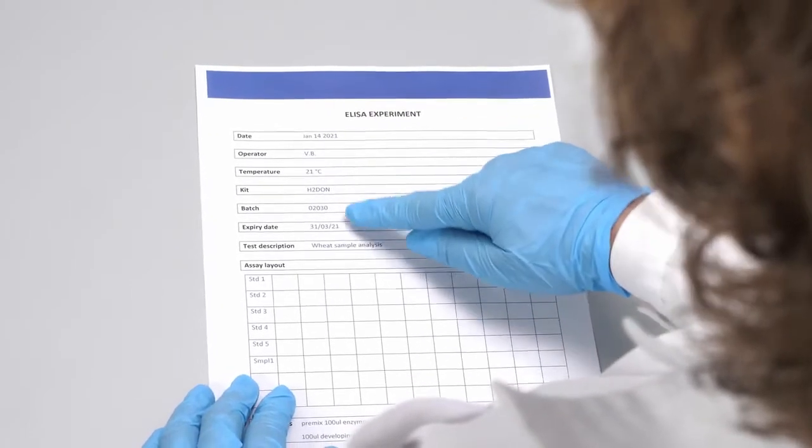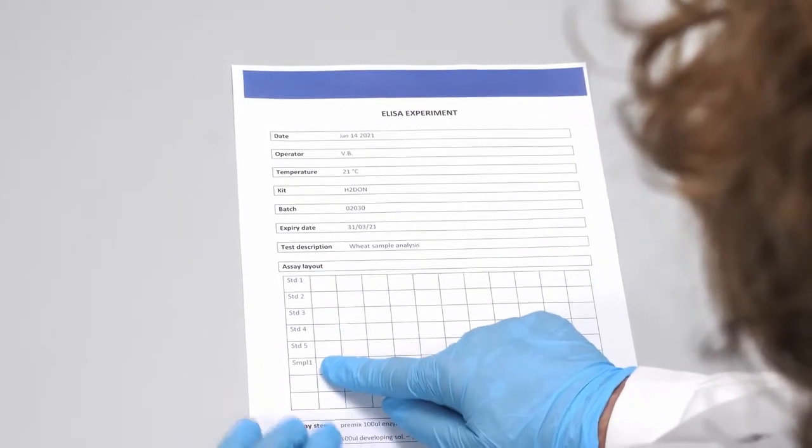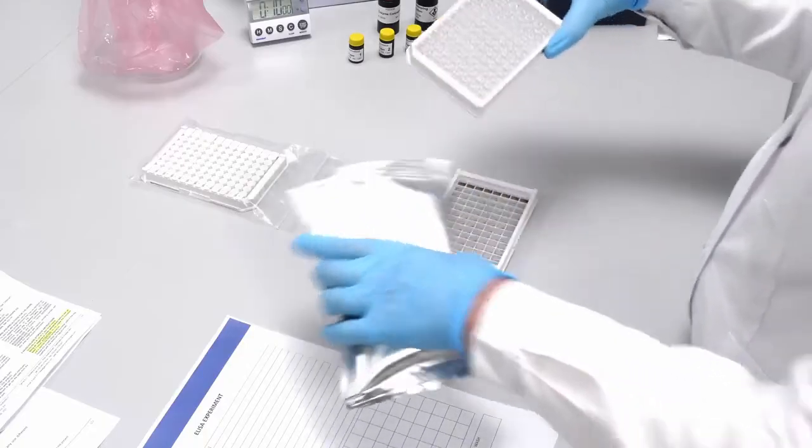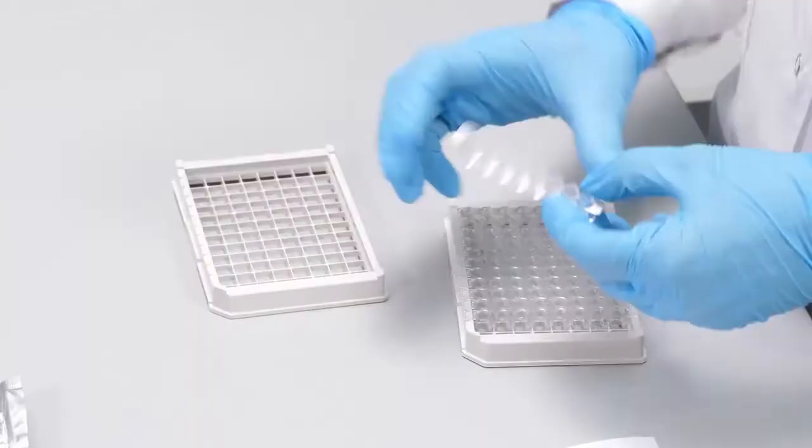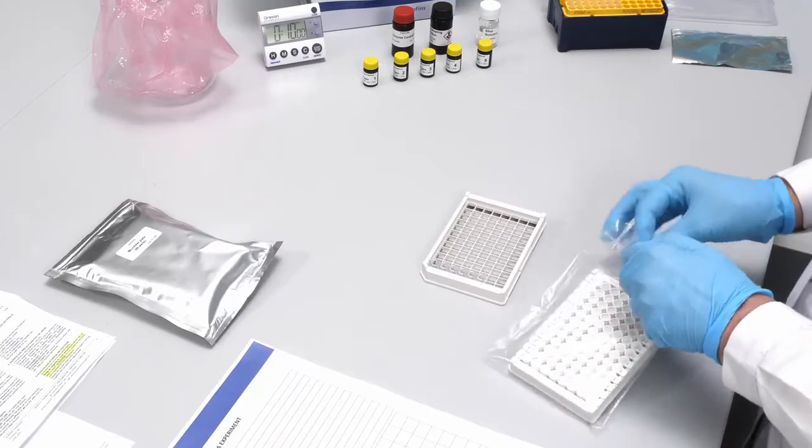Draw your experiment sheet and assay layout. Record the position of each standard and sample. Prepare the necessary wells for the session. You need one reaction well and one premixing well for each standard and sample.